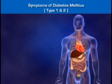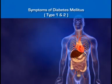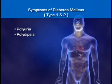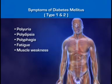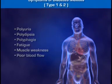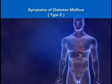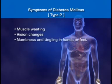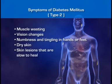Symptoms of Type 1 and Type 2 diabetes mellitus include the three P's: polyuria, polydipsia, and polyphagia — which is excessive hunger. Other symptoms include fatigue, muscle weakness, and poor blood flow, which leads to further fatigue. Type 2 diabetes mellitus may also present with other non-specific symptoms including muscle wasting, vision changes such as blurring, numbness and tingling in the hands or feet, dry skin, and skin lesions that are slow to heal.